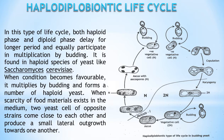When conditions become favorable, it multiplies by budding and forms a number of haploid yeast. When scarcity of food materials exists in a medium, two yeast cells of opposite strains come close to each other and produce a small lateral outgrowth towards one another.